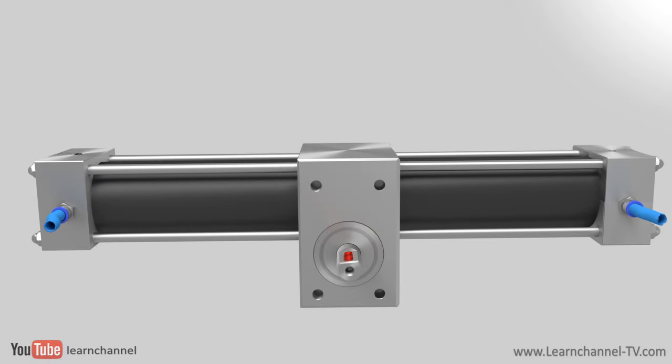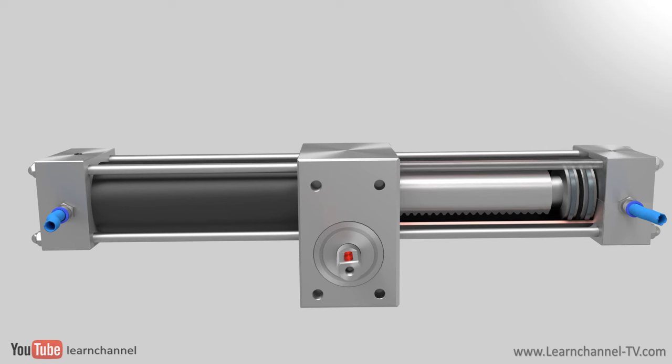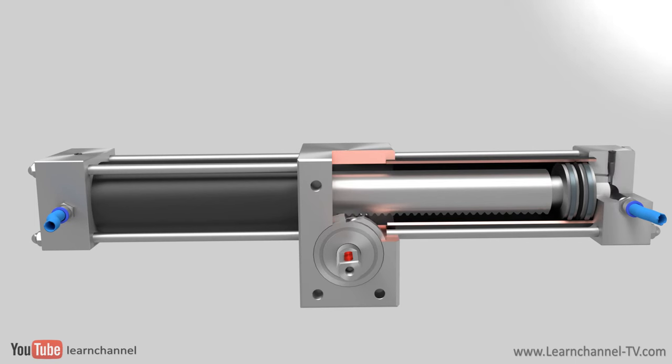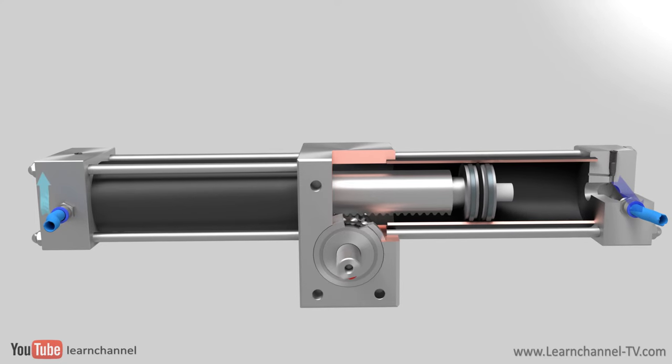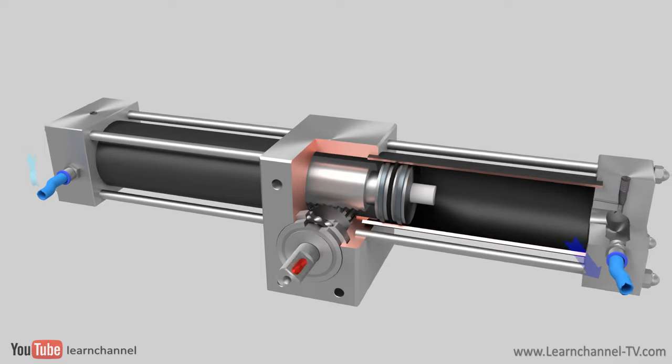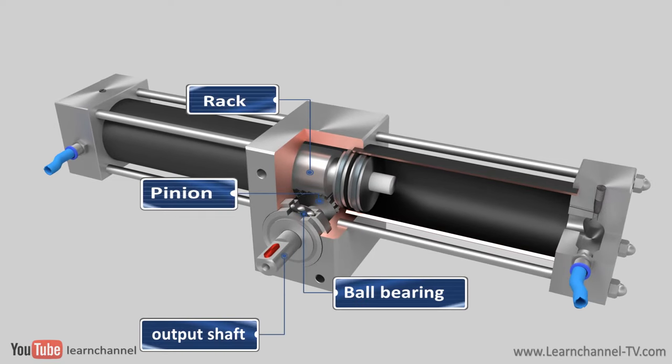Pneumatic rotary cylinder converts compressed air pressure into a rotary motion. One of the most widely used designs is the rack and pinion rotary actuator. A long piston with gear rack teeth meshes with a pinion mounted to an output shaft. The output shaft of this double-acting cylinder rotates counter-clockwise by pressurizing the right-hand chamber.